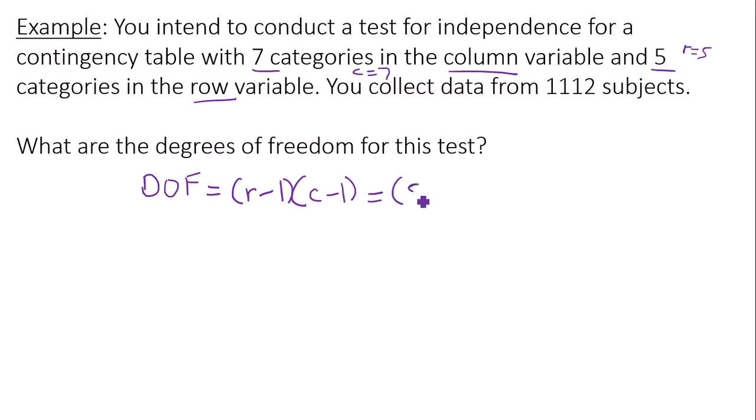So calculate five minus one times seven minus one. Calculate four times six, which gives you 24 degrees of freedom.